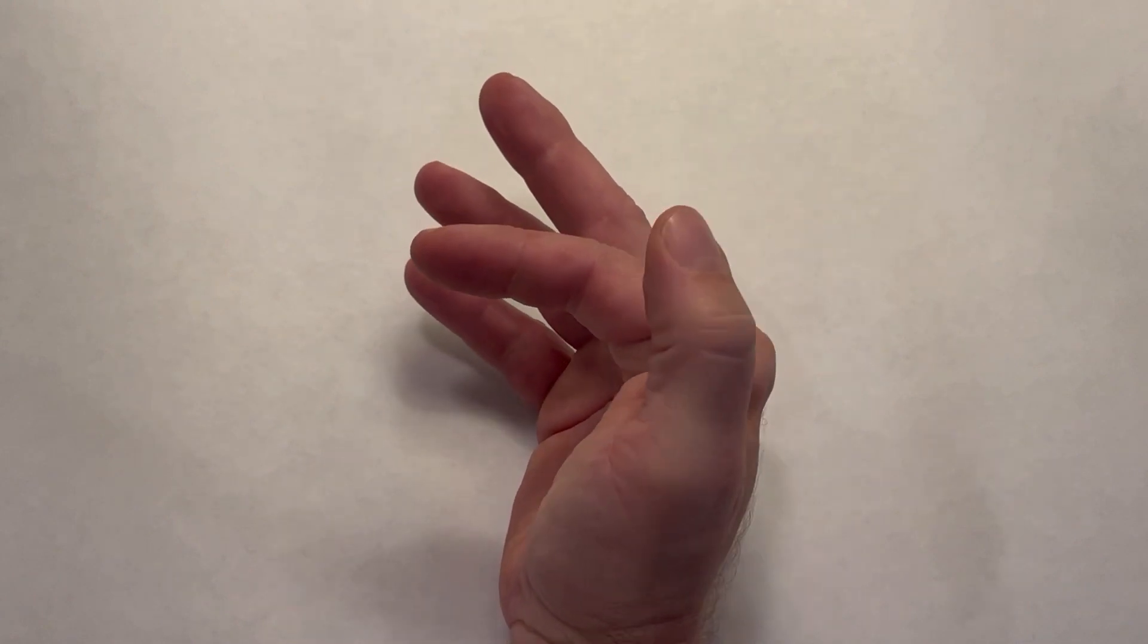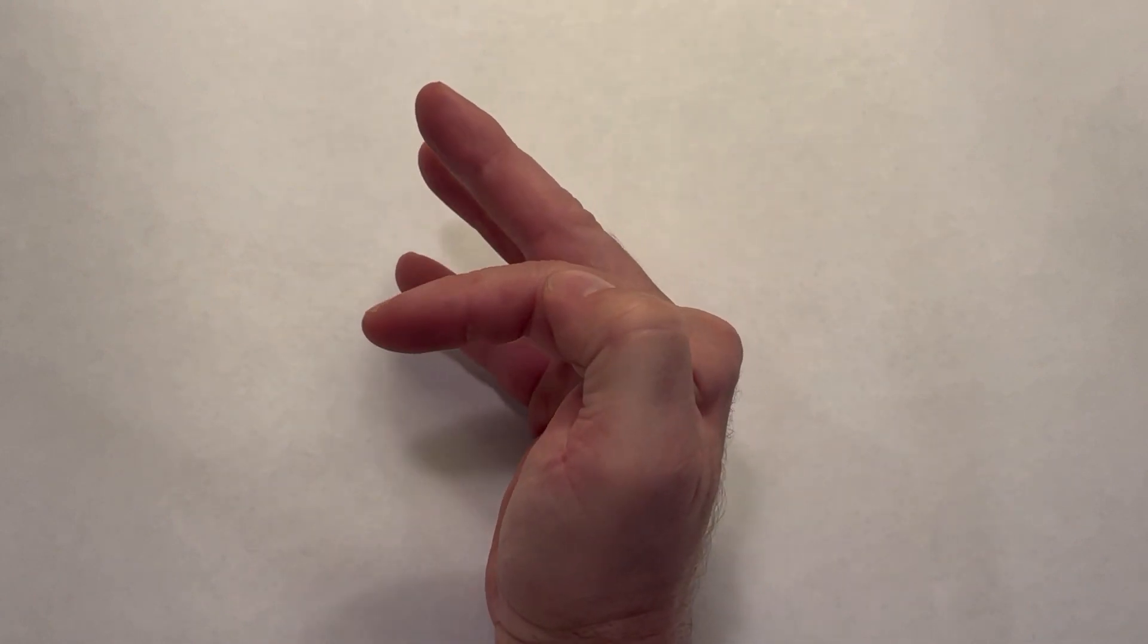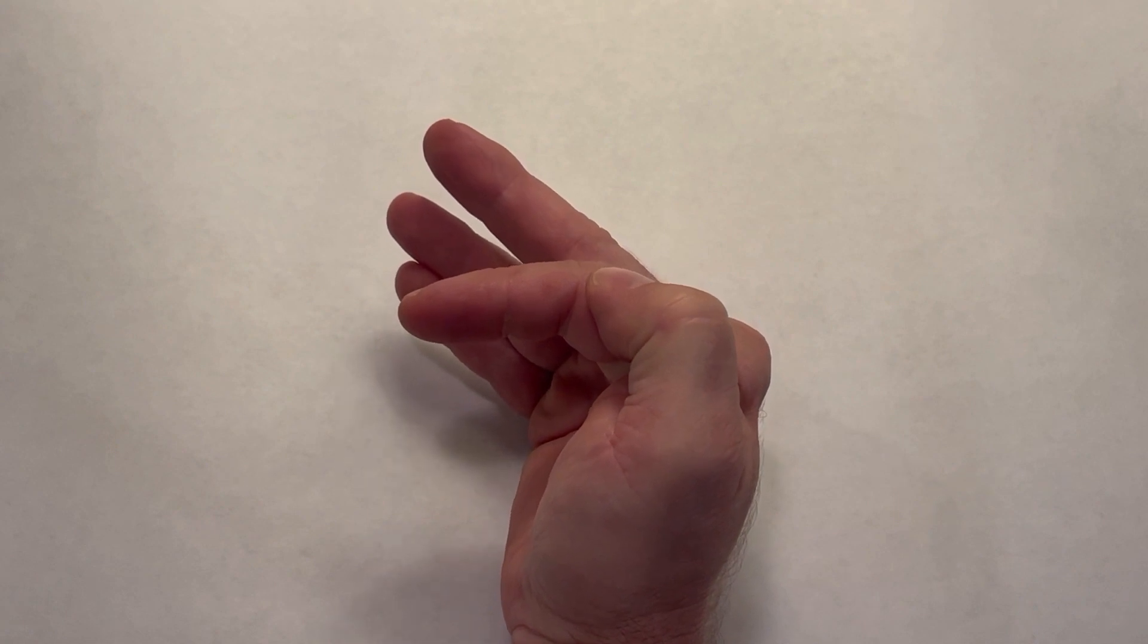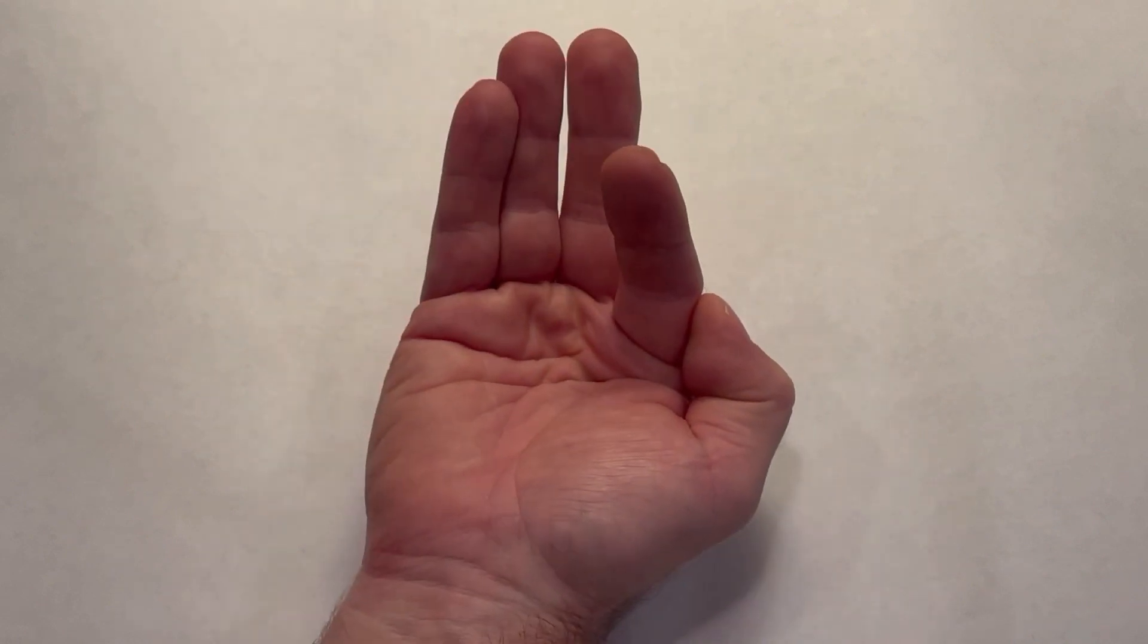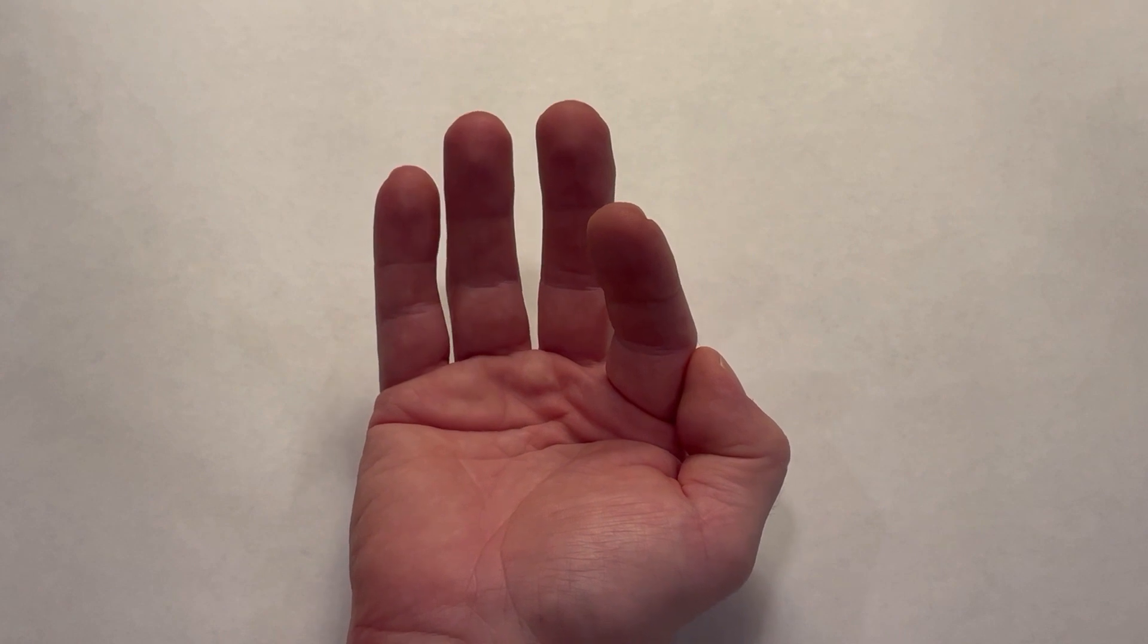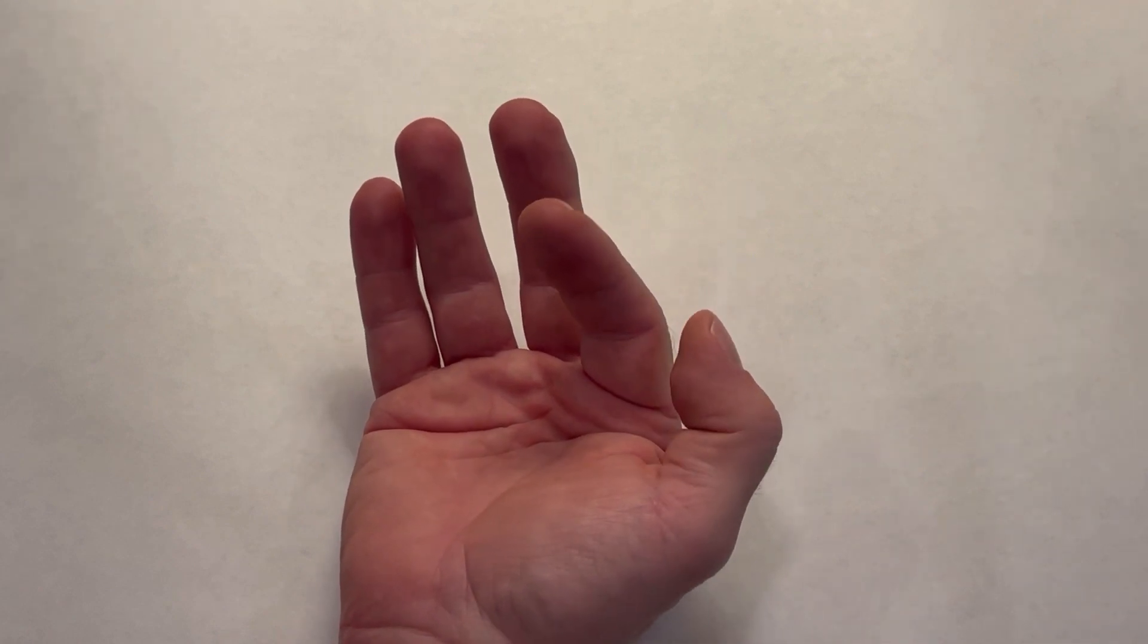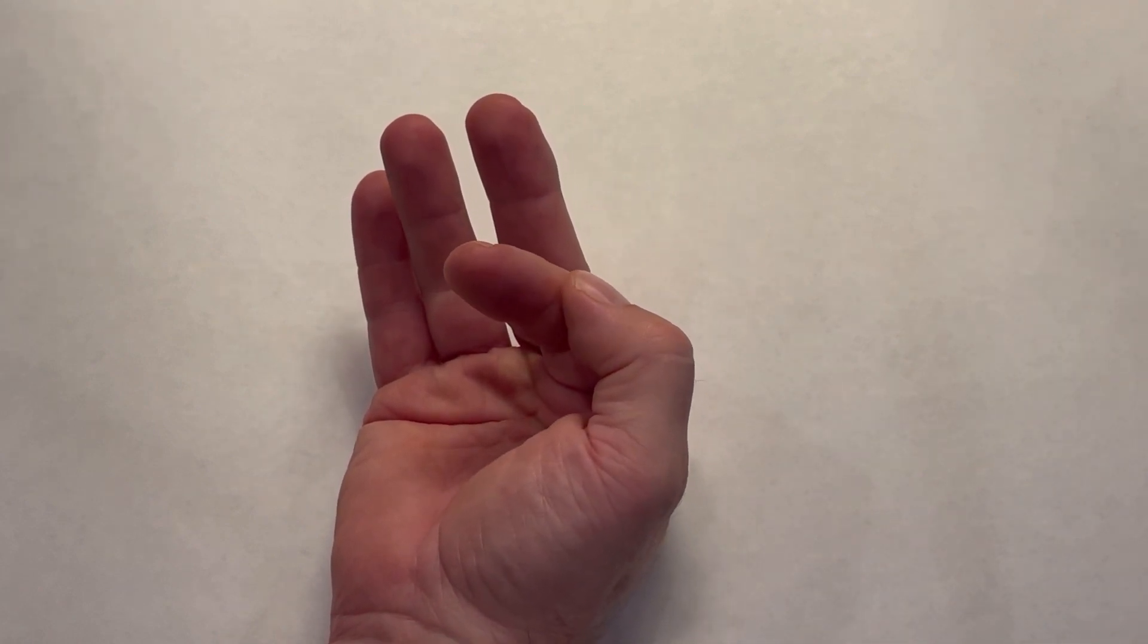Stage 0 is thumb pad to the side of the radial side of the index finger proximal phalanx. This obviously requires no opposition, which is why it's stage 0. Then stage 1 is the thumb pad to the side of the middle phalanx of the index finger.